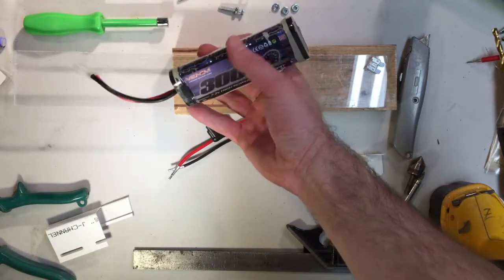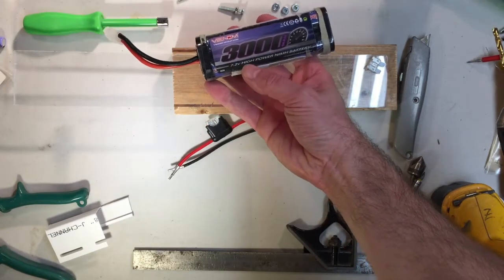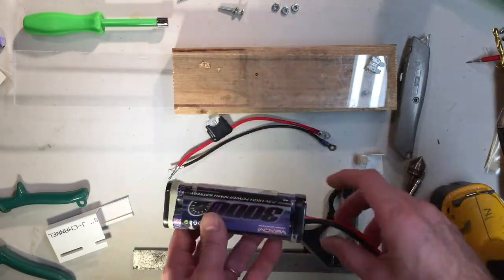We have this 3,000 milliamp hour battery. It's a 3 amp hour, 7.2 volt nickel metal hydride battery, and we want to connect it safely to our circuits.